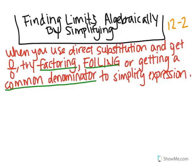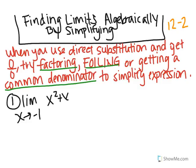You may need to pause this — I'm going to go right into the example. The first example is finding the limit as x approaches negative 1 of x squared plus x, all over x plus 1.